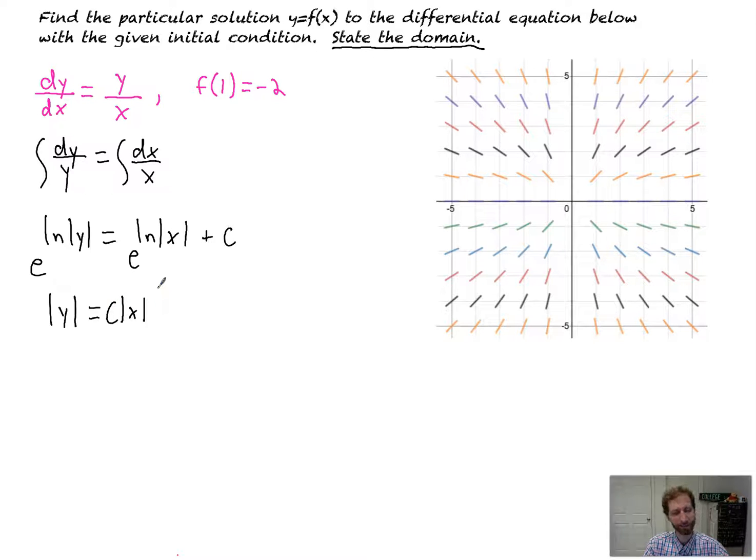You might be like, why times c? When we undid this, this was e to the ln of the absolute value of x times e to the c. E to the c became that constant. When we undo the absolute value of y, it would be plus or minus c, which is just some constant, times the absolute value of x.